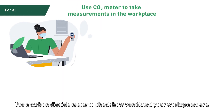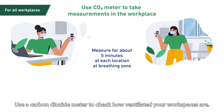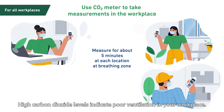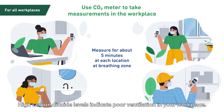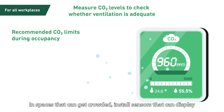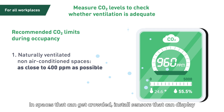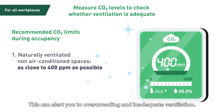Use a carbon dioxide meter to check how ventilated your workspaces are. High carbon dioxide levels indicate poor ventilation in your workplace. In spaces that can get crowded, install sensors that can display carbon dioxide levels constantly. This can alert you to overcrowding and inadequate ventilation.